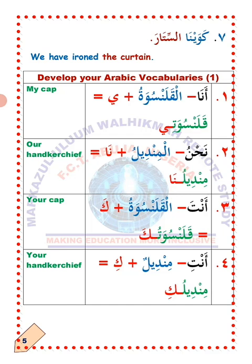Arba, number four — Anti, you. So how do we change the word mindilun to suit Anti so as to indicate ownership? All you need to do is drop one of the two dhammas appearing on the last letter — step one. Step two: you attach kafun carrying kasra to the last letter. Mindilun will now become mindiluki, which means 'your handkerchief.' You can only use this to talk to a single female person in Arabic. La'allaka fahimt? I hope you understand. MashaAllah.